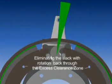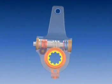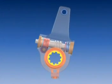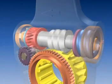Eliminating the slack with rotation back through the excess clearance zone: During the final releasing rotation of automatic brake adjuster, the pinion and ratchet rotate the clutch worm wheel through the control worm screw.